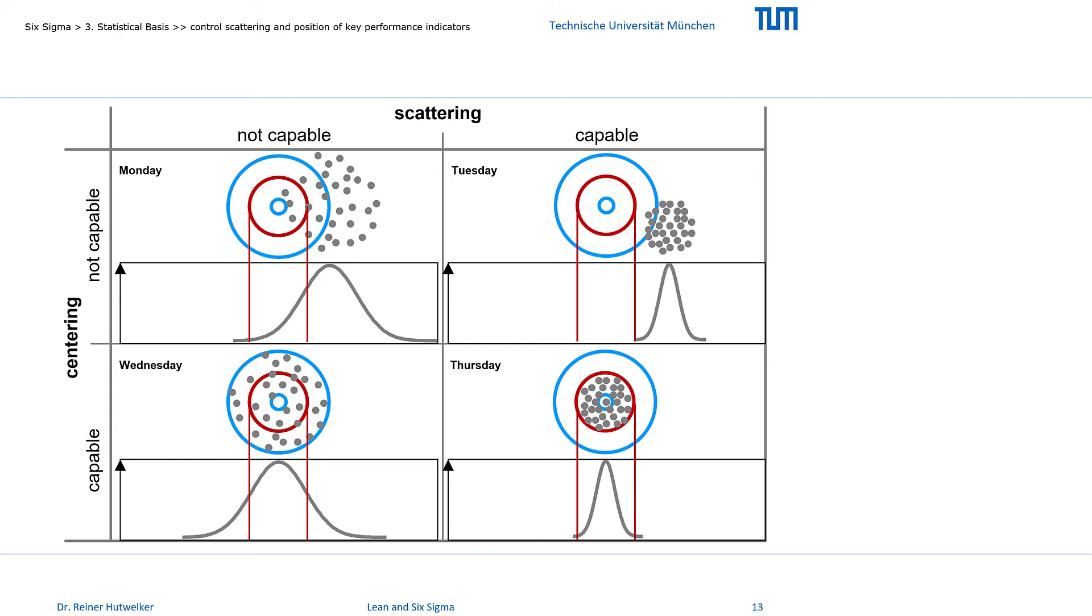Today is Friday. You are the Six Sigma expert, and all responsible process owners are sitting around you. Everyone agrees that Thursday's result should be repeated in future. Unfortunately, we lost Thursday's records of process and machine settings. But we have the records for the other 3 days. Which day offers the best starting point to achieve the good results of Thursday again?